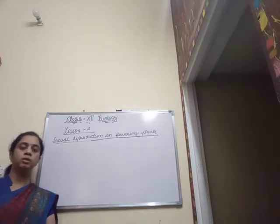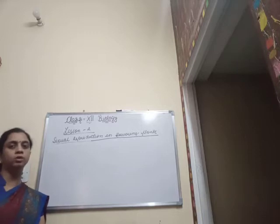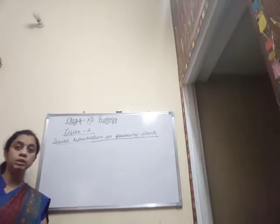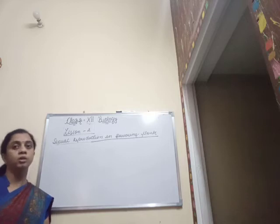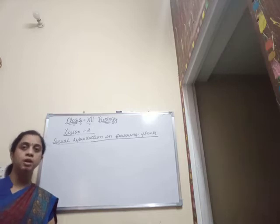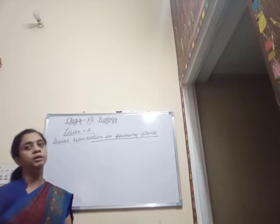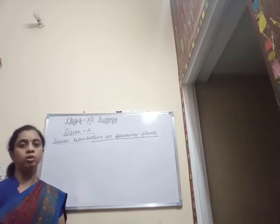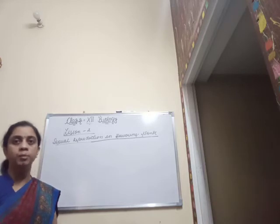Welcome back students. In continuation with the online class series of biology class 12, chapter number 2 — sexual reproduction in flowering plants. We have talked about the production of gametes, that is both megasporogenesis and microsporogenesis, the production of the male gamete as well as the female gamete. Now we are moving ahead with the other event of the pre-fertilization phase, that is the transfer of gametes.